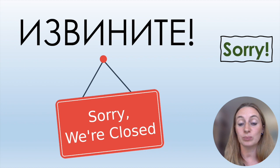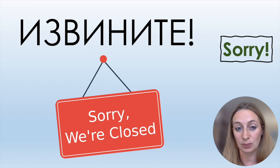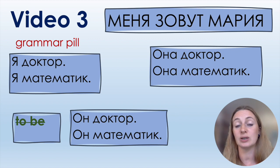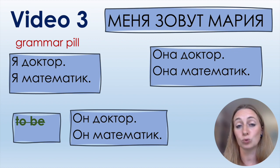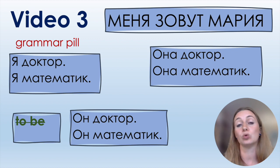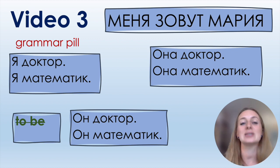In this video I'll give you a little grammar — just a revision. You don't need to use the word 'to be' like in English. In English you say 'I'm a doctor' or 'I'm a mathematician,' but in Russian you say Я доктор, Я математик. You can also say 'She is a doctor': Она доктор, Она математик. Or for a boy: Он доктор, Он математик.